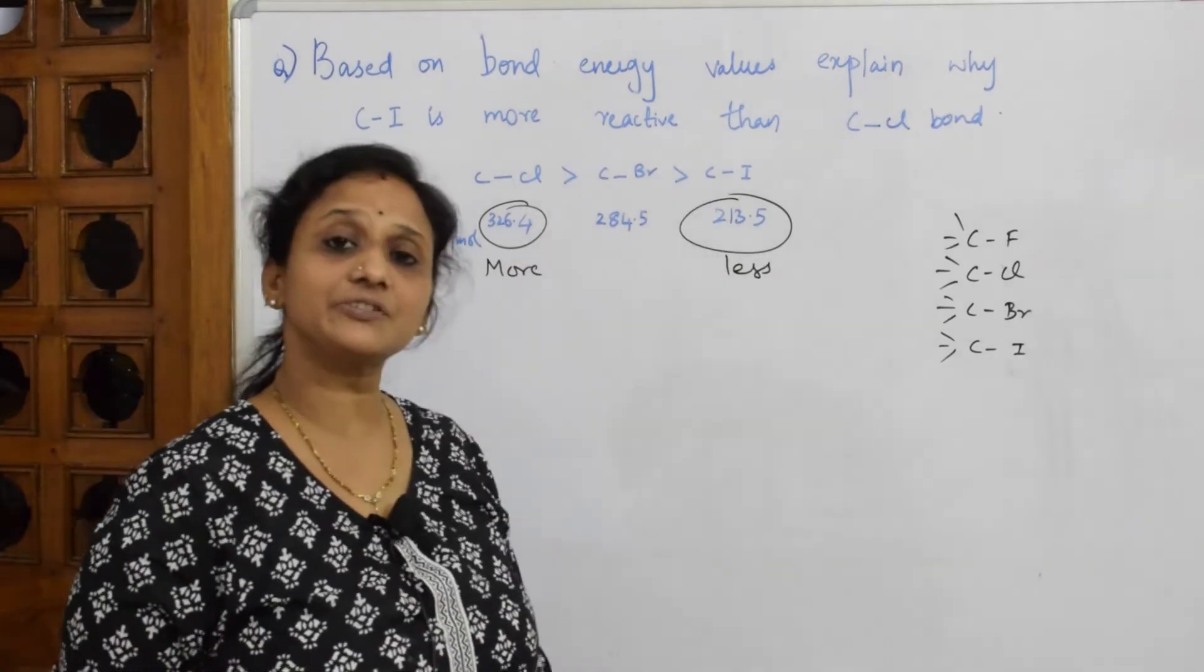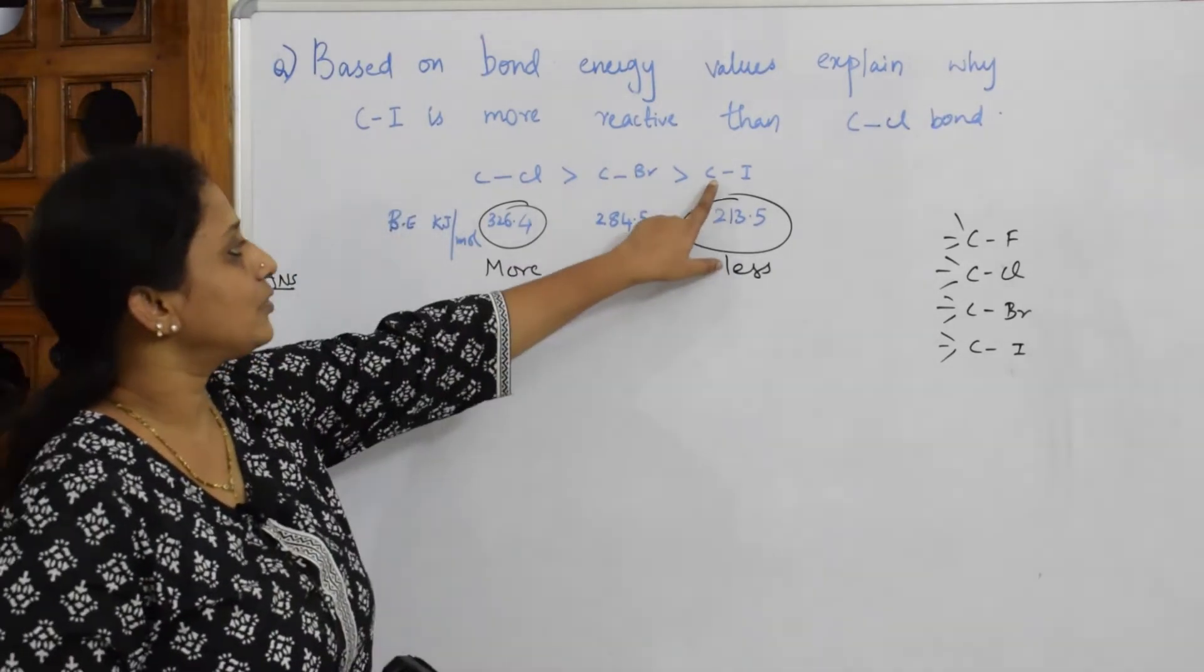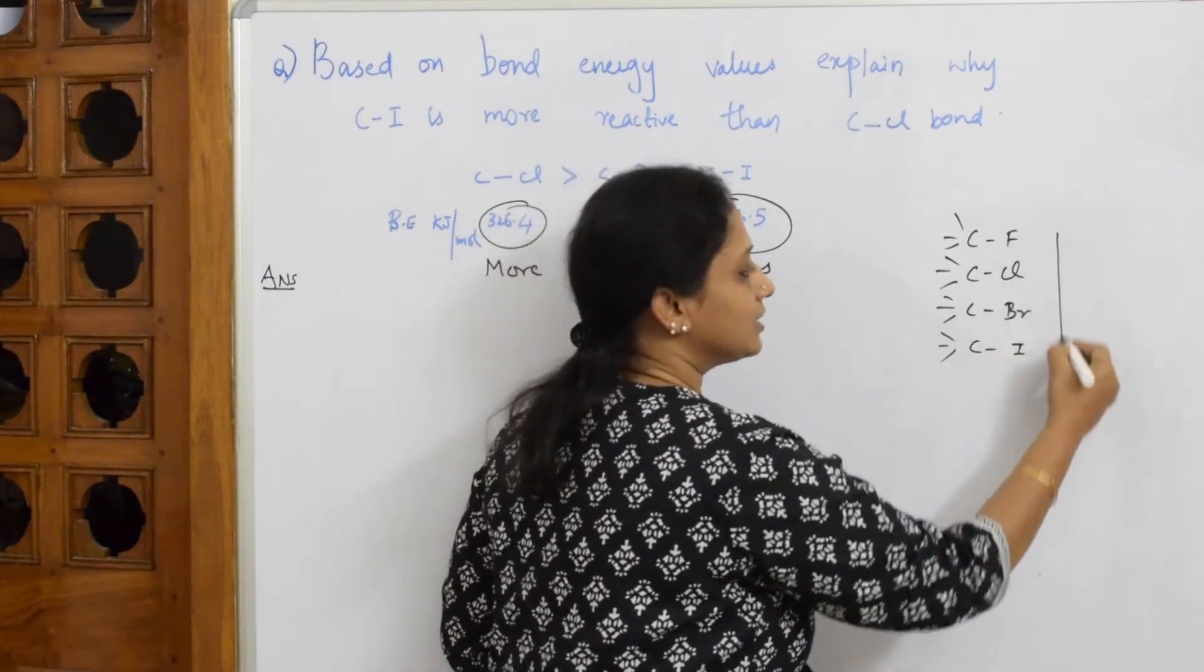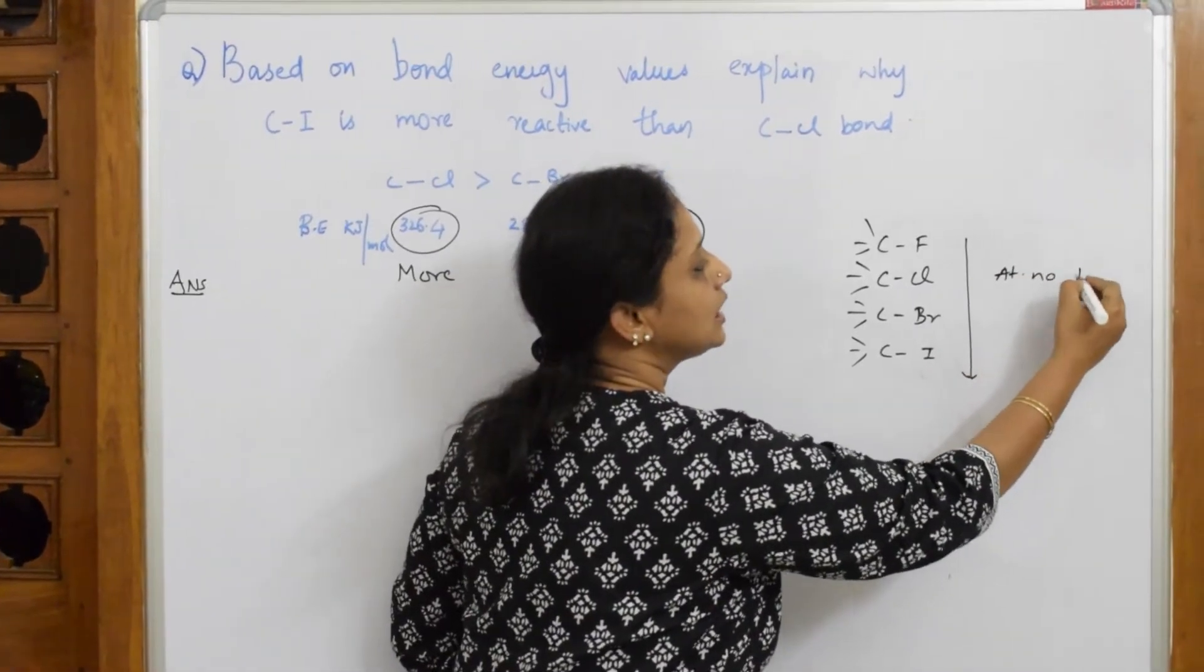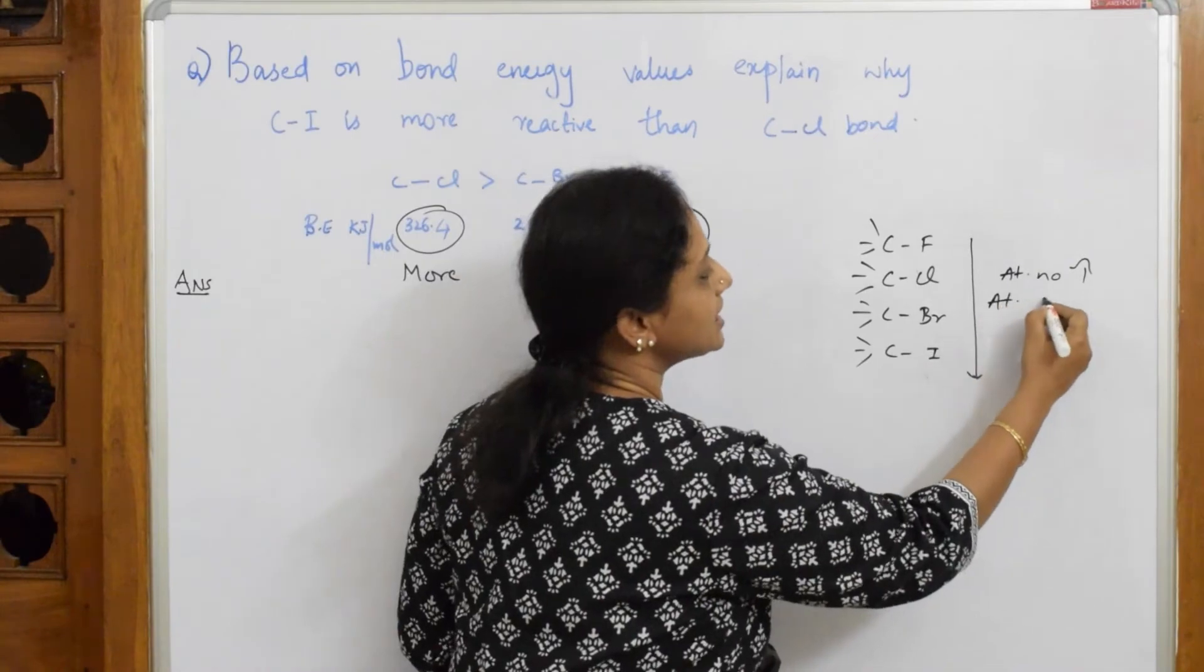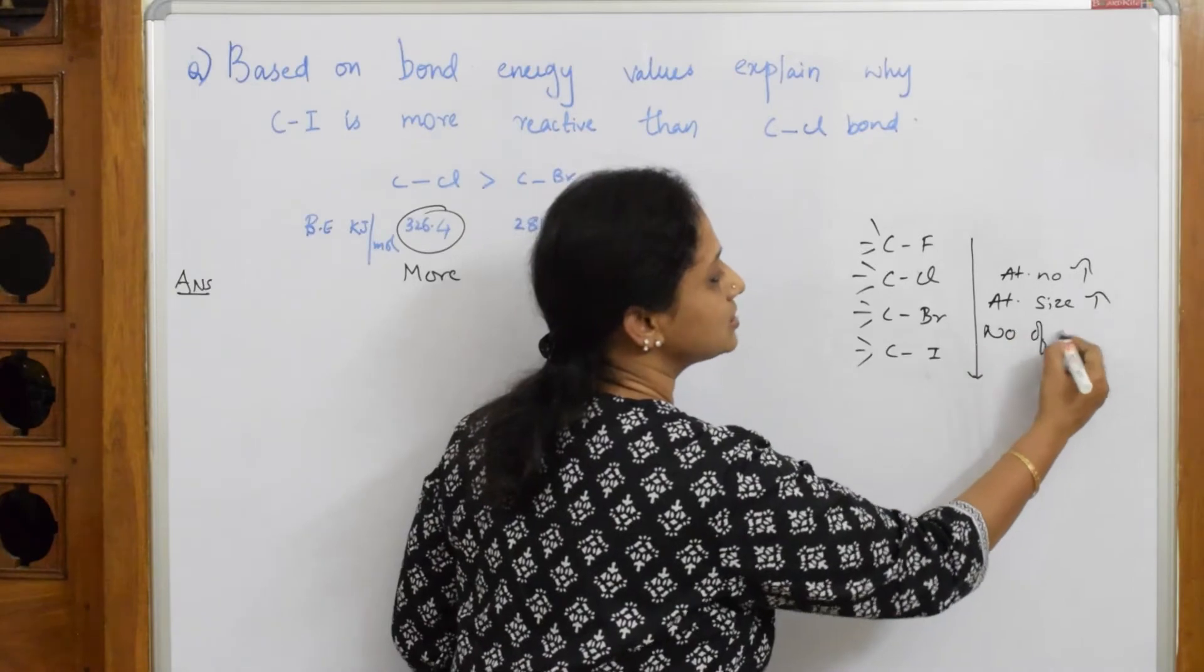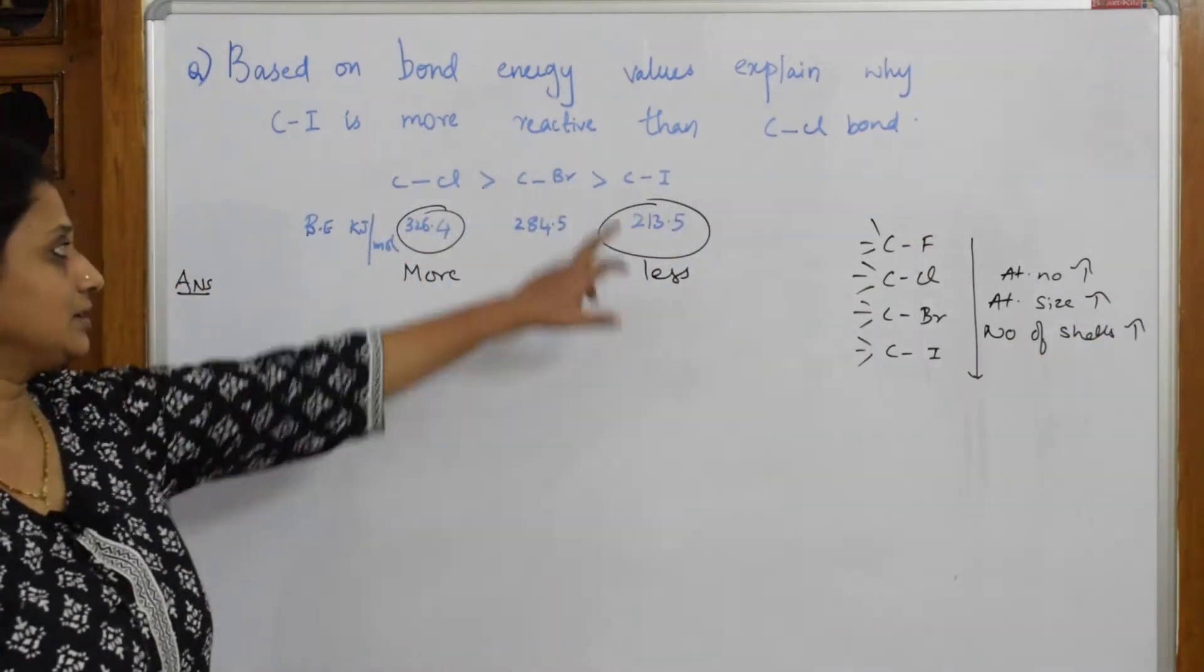So what is common here? This is also common. What is differing? The size of halogen atom, that's most important here. When we just go down from fluorine to iodine, we always know the atomic number increases. When the atomic number increases, the atomic size increases. When the atomic size increases, number of shells also increase.